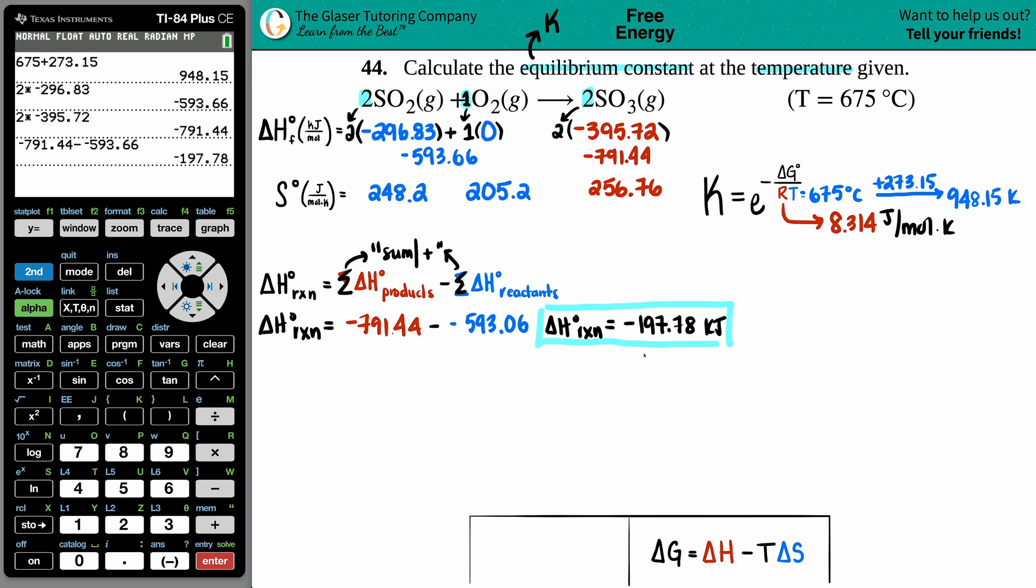Now we have to do the same for entropy. We can take the same formula, and instead of saying ΔH's, we're now solving for ΔS's. So ΔSrxn would be the sum of the S products minus the sum of the S reactants.